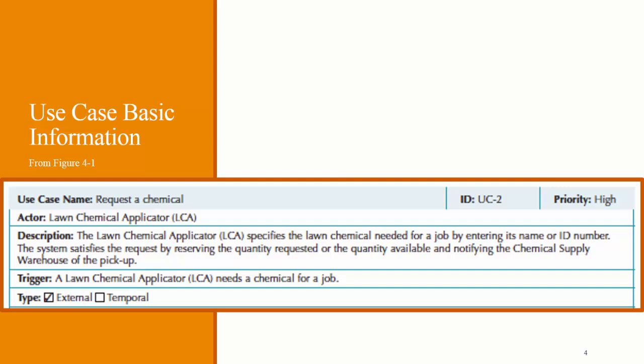Here's an example of how use case basic information might be formatted in a formal use case document. The example here is from the Request a Chemical use case discussed in the textbook Chapter 4.